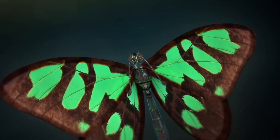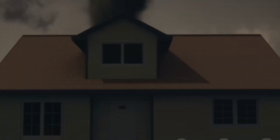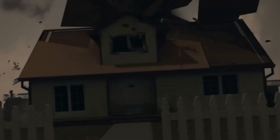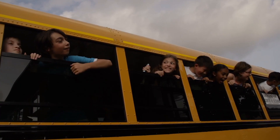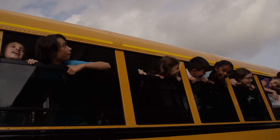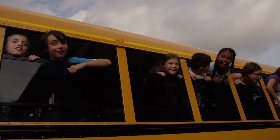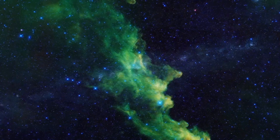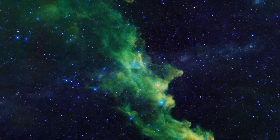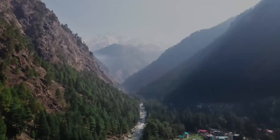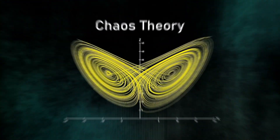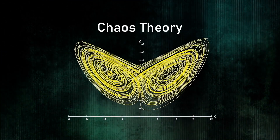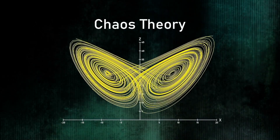When we talk about chaos, it's often in reference to things that seem messy or random, like the rowdy behavior of kids on a bus ride home from a field trip. But for scientists, chaos means something specific. It describes a system that isn't entirely random, but is still very hard to predict. This idea has sparked a whole field of study known as chaos theory.